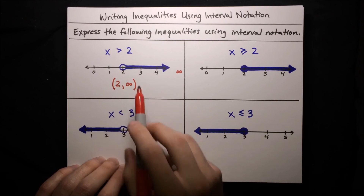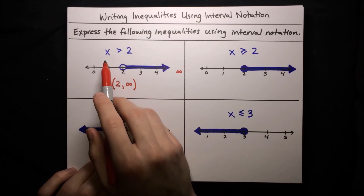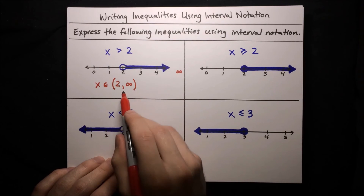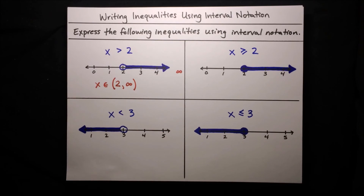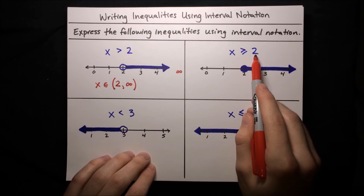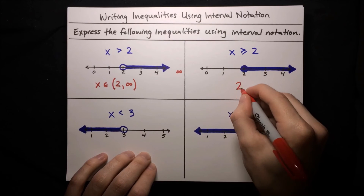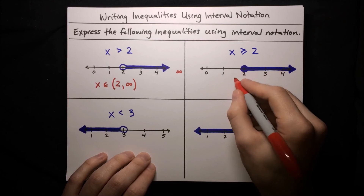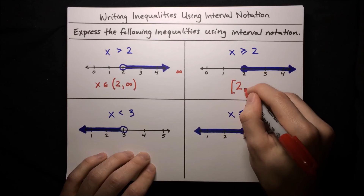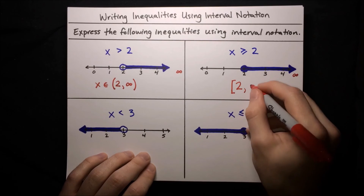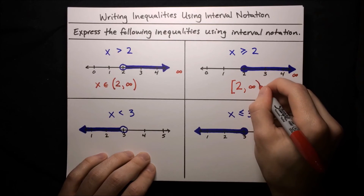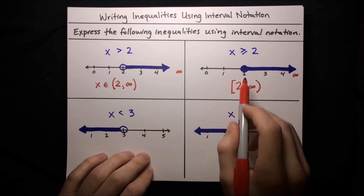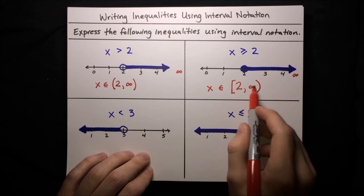So the interval notation for x > 2 is (2, ∞), and we say x ∈ (2, ∞). For x ≥ 2, it's a similar idea: we start with endpoint 2, but this time it's a closed circle because equality is allowed, so we use a bracket. On the right we again go to infinity, never actually attaining it, so we use a parenthesis. The interval notation is [2, ∞), and x ∈ [2, ∞).